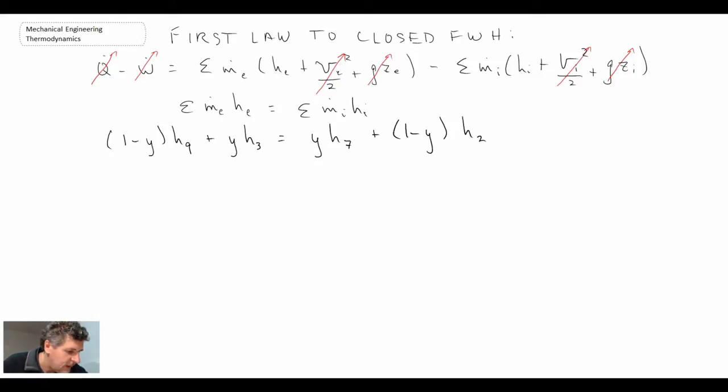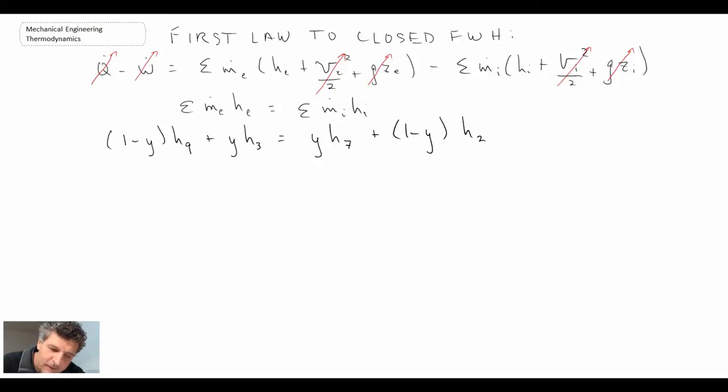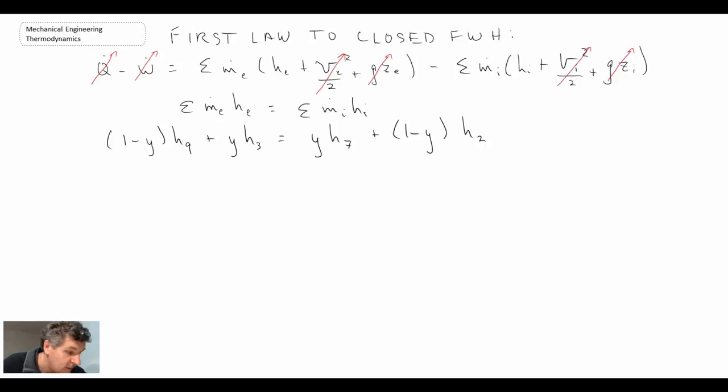So that's what we get for the feedwater heater. And the other thing that we have, we have a mixing chamber, which is something that's different from what we looked at before. Mixing chamber is basically just a T-elbow. It can be as simple as a T-elbow where you have two inlets and one exit and a piping system.